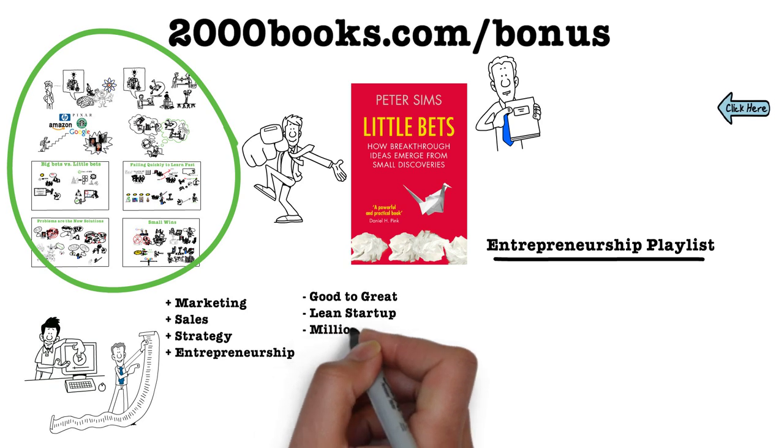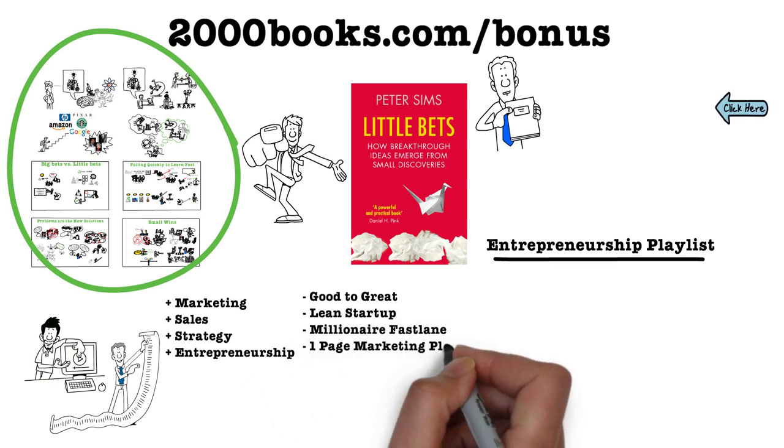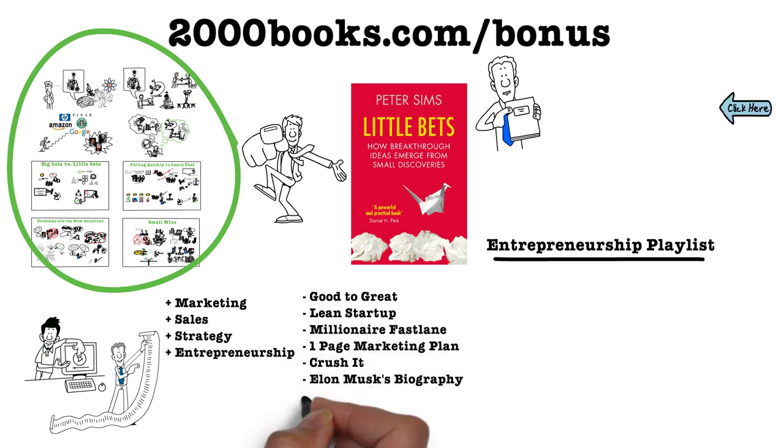Summaries include books like Good to Great, Lean Startup, Millionaire Fastlane, One Page Marketing Plan, Crush It, Elon Musk's biography, Jeff Bezos' biography, and a lot of other great books just like these. So make sure to check it out.